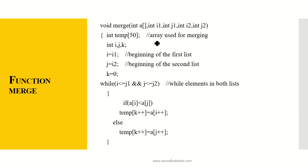Now this is how my merge function works. I have a temporary array which is used for merging with a size of 50. int i, j and k. i is equal to i1, that is this value, which is coming from my calling function. j is equal to i2, which comes from here. k is initialized to 0.